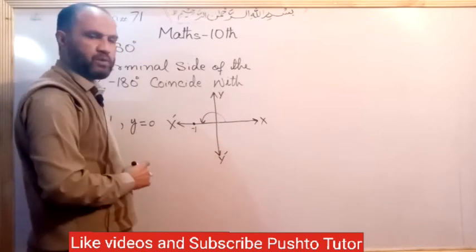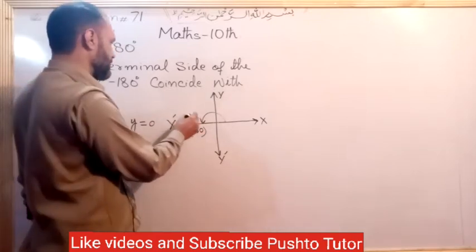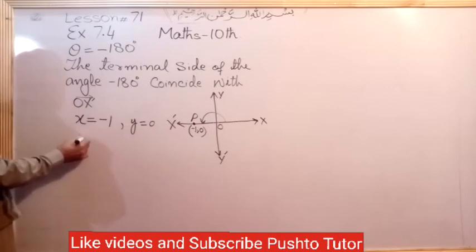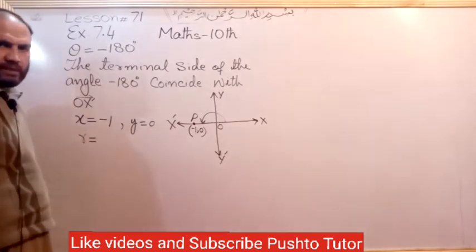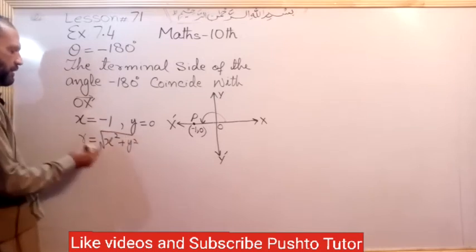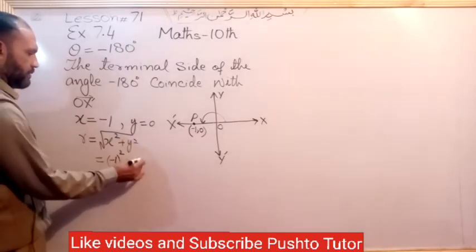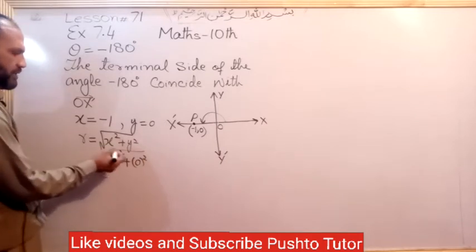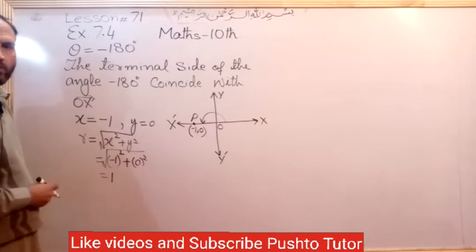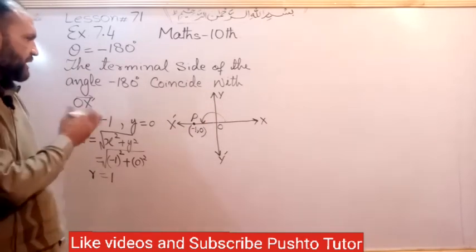The point is x equals minus 1 because the x-axis is minus 1, and y equals 0. Now we calculate R for the right angle triangle. R equals square root of x squared plus y squared, which is square root of (-1)² + 0² = square root of 1 = 1.